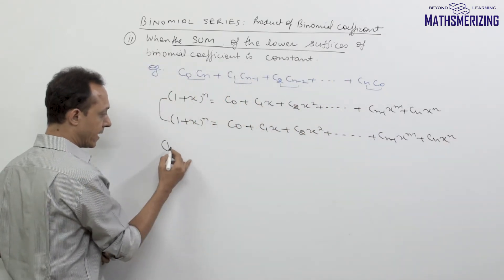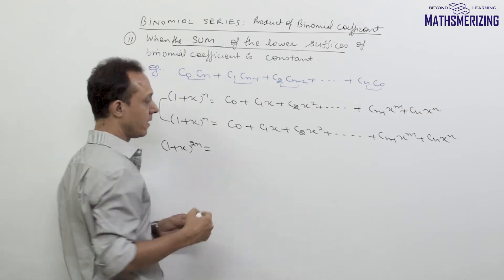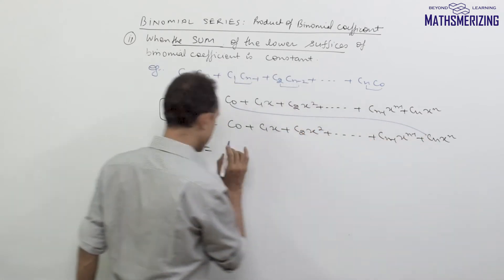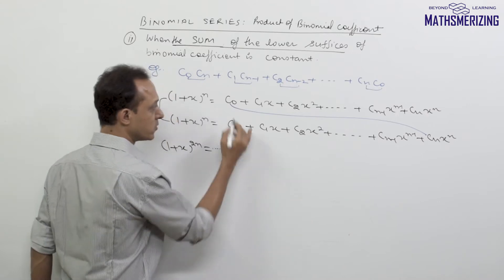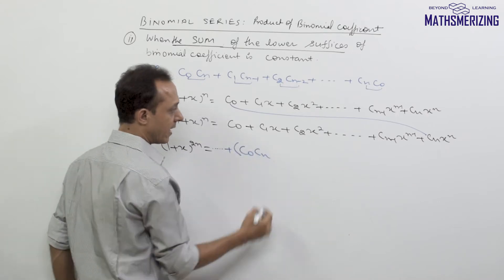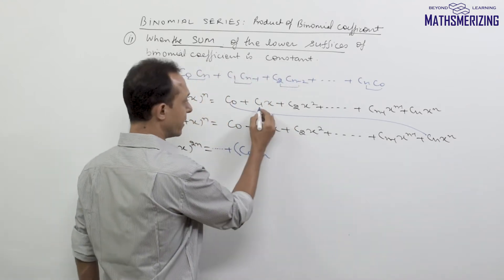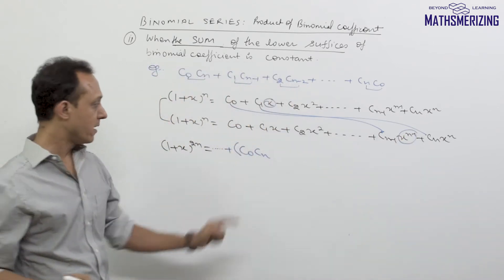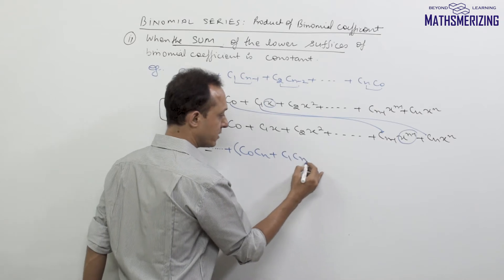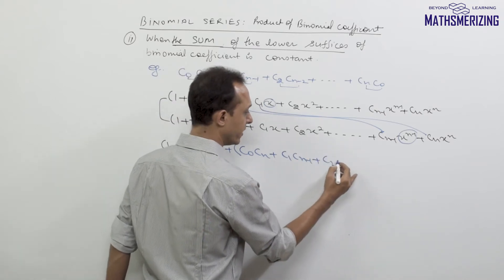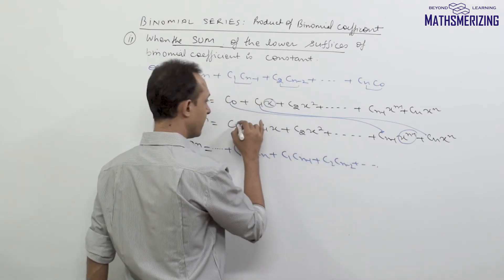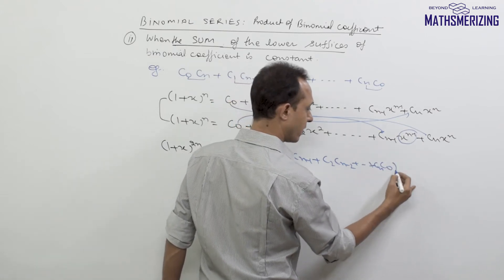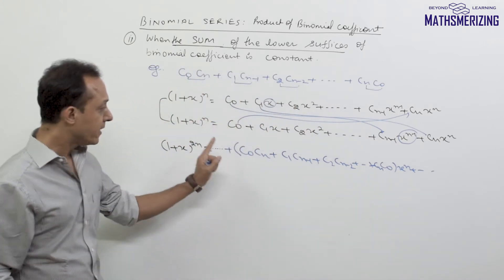Multiplying the two expansions gives (1+x)^(2n). On the right-hand side, C0 multiplied by Cn gives a term with x^n. C1 multiplied by C(n-1) gives x^1 · x^(n-1) = x^n. Similarly C2·C(n-2) and finally C0·Cn all contribute with coefficient of x^n. So to find the sum of the series, we need the coefficient of x^n on the left-hand side.